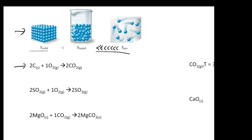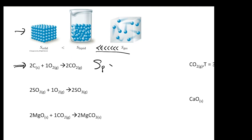Let's look at the first example. Count the number of moles of gas on the reactant and product side. Here you have two moles of gas on the product side and one mole of gas on the reactant side. Since there is more gas on the product side, the entropy of the product is larger than the entropy of the reactant. You can ignore solids and liquids — the gas molecules are what matter.